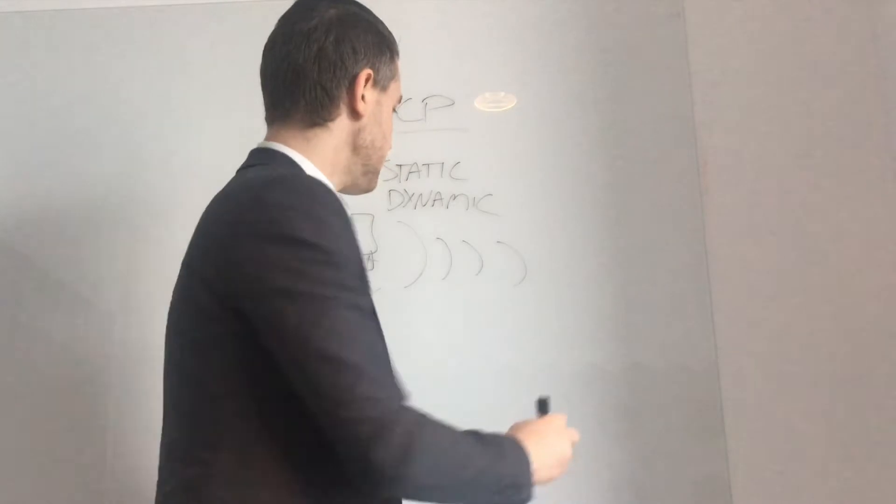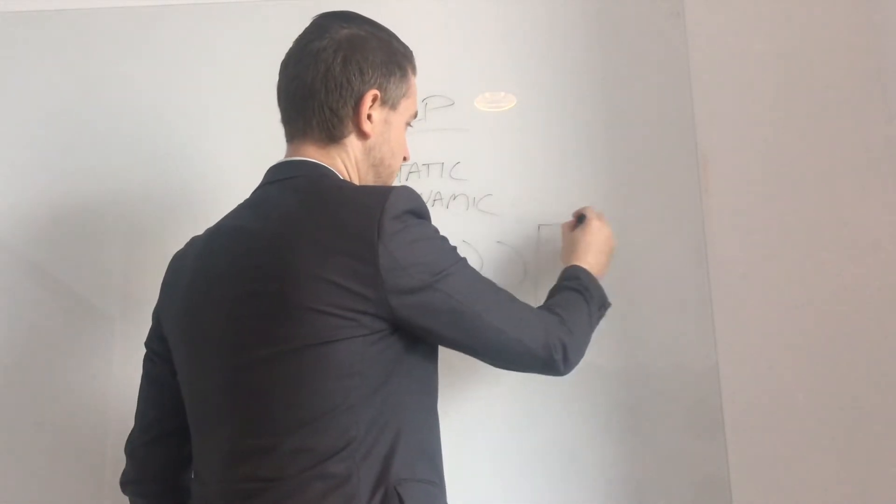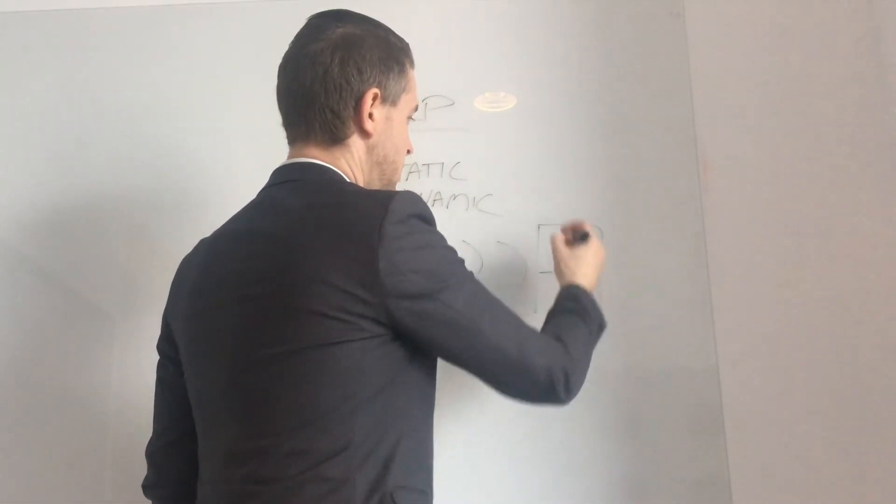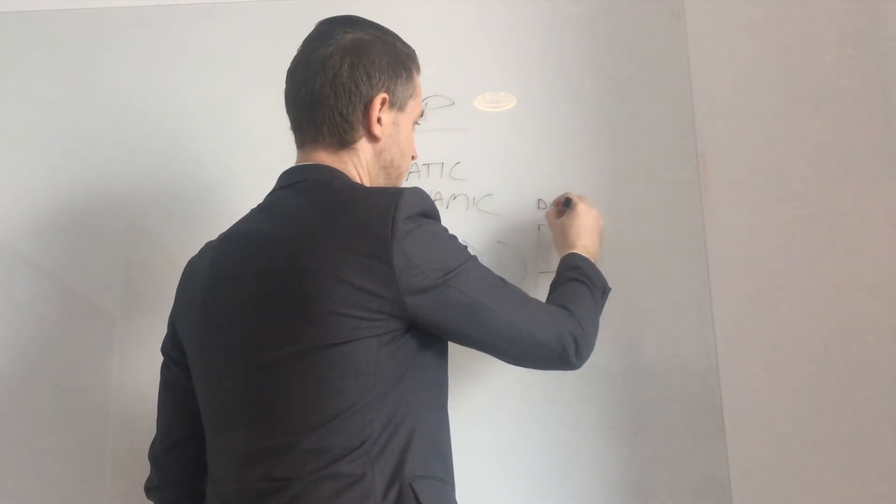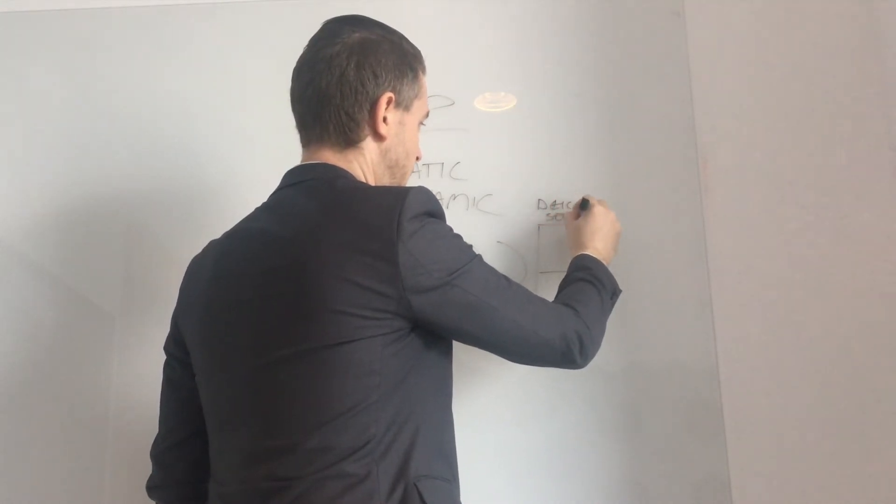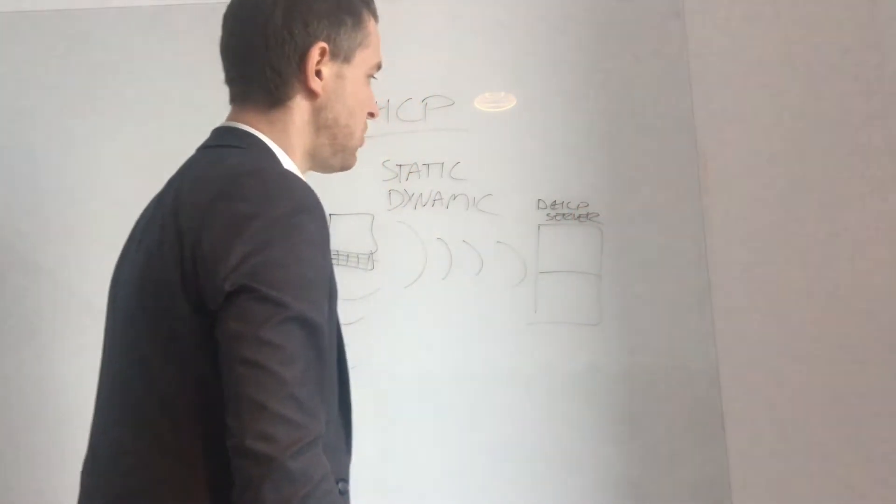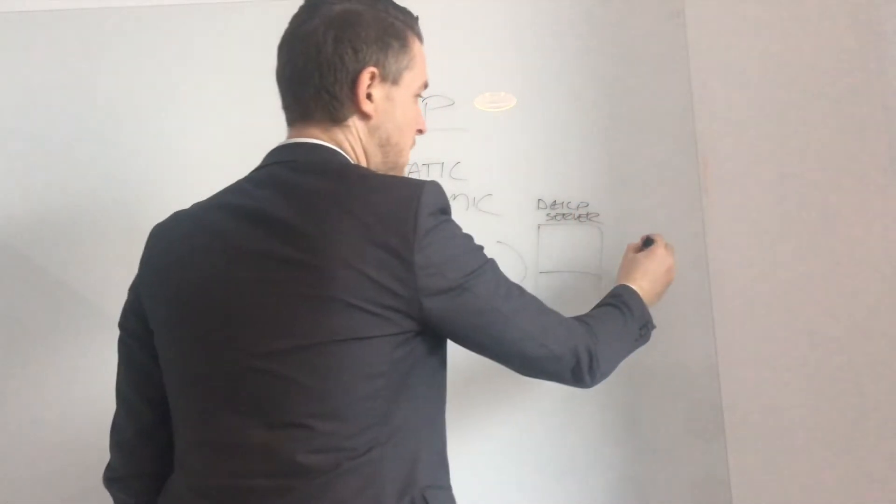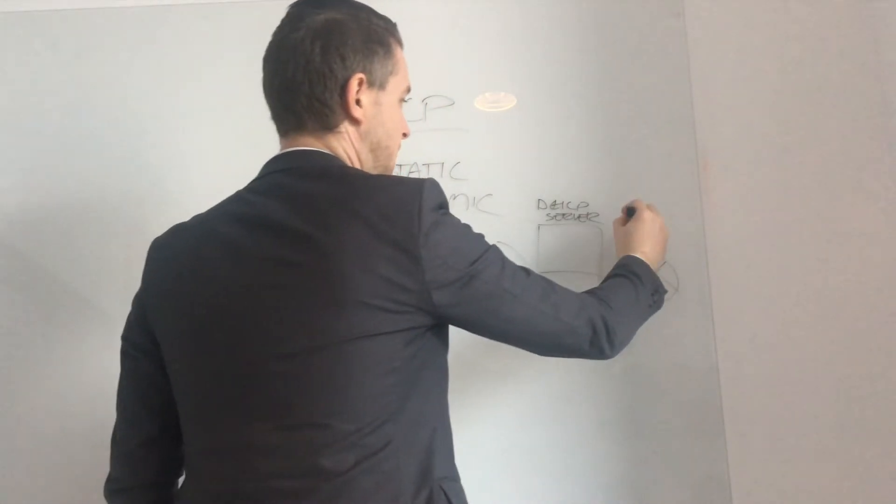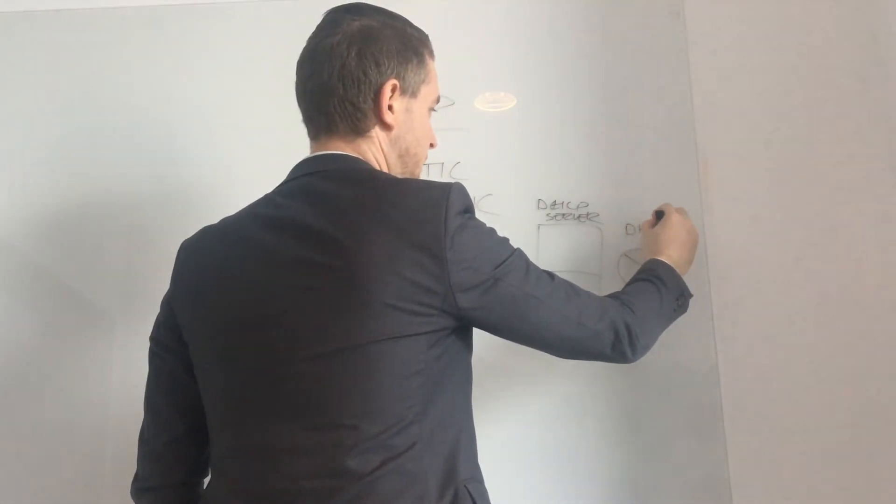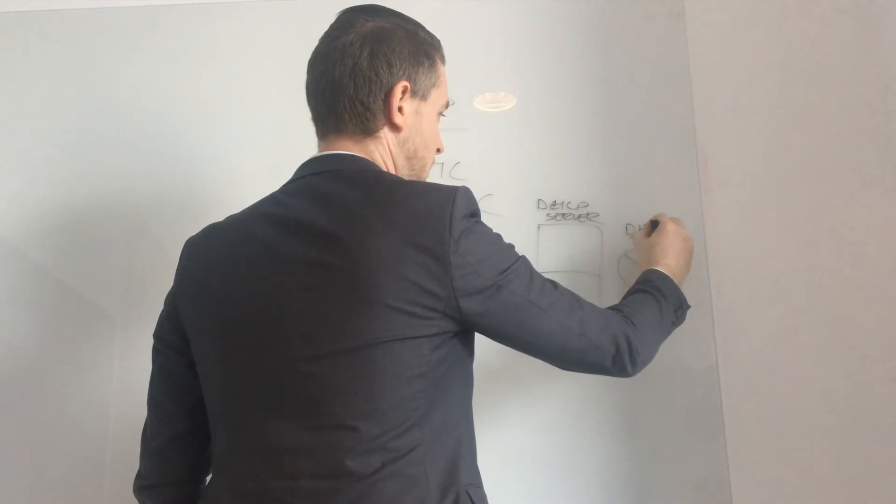Once it finds it, let's say it's just found a server here. So this server is a DHCP server. It could also be a router at home or in a business. This could also be acting as a DHCP server.